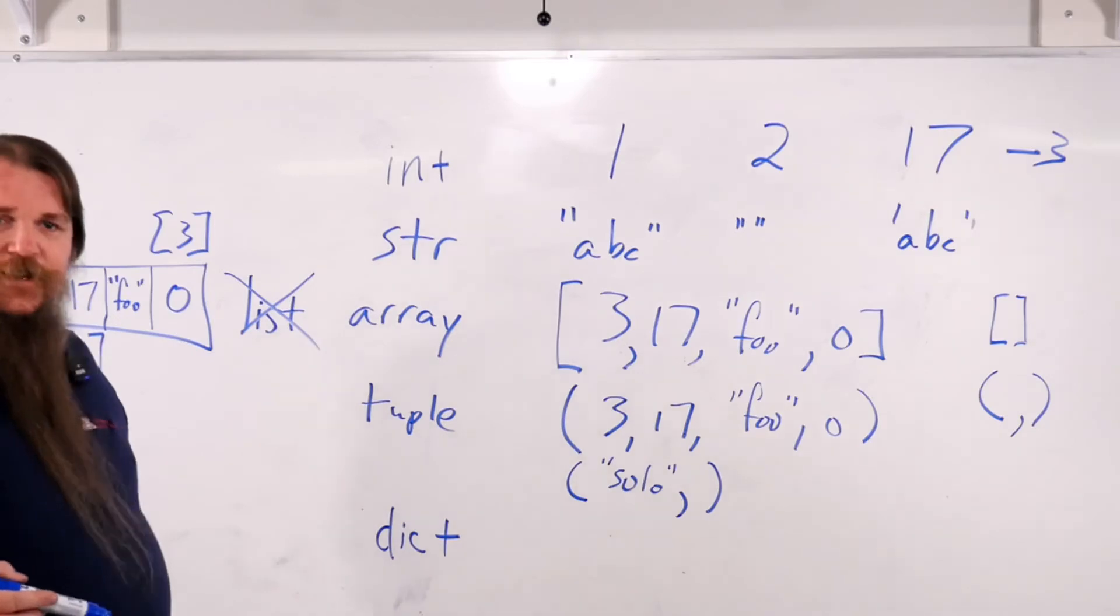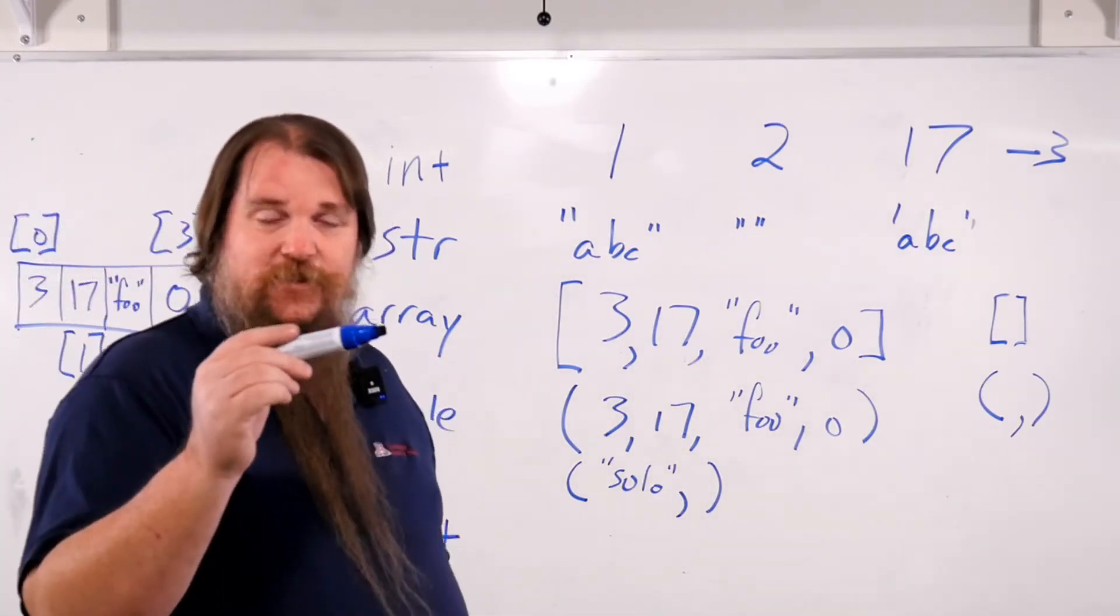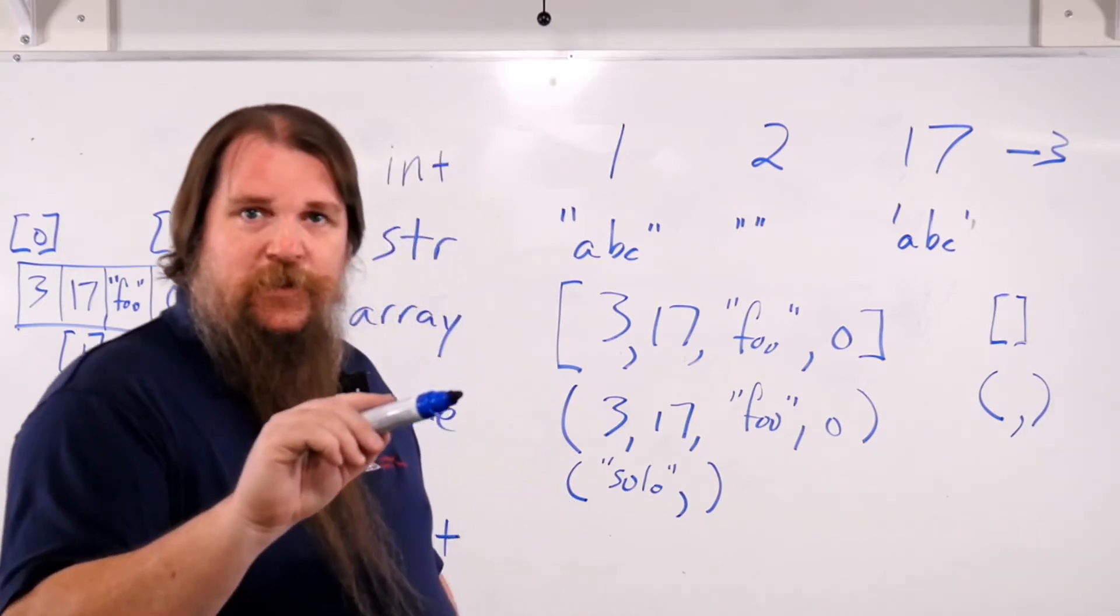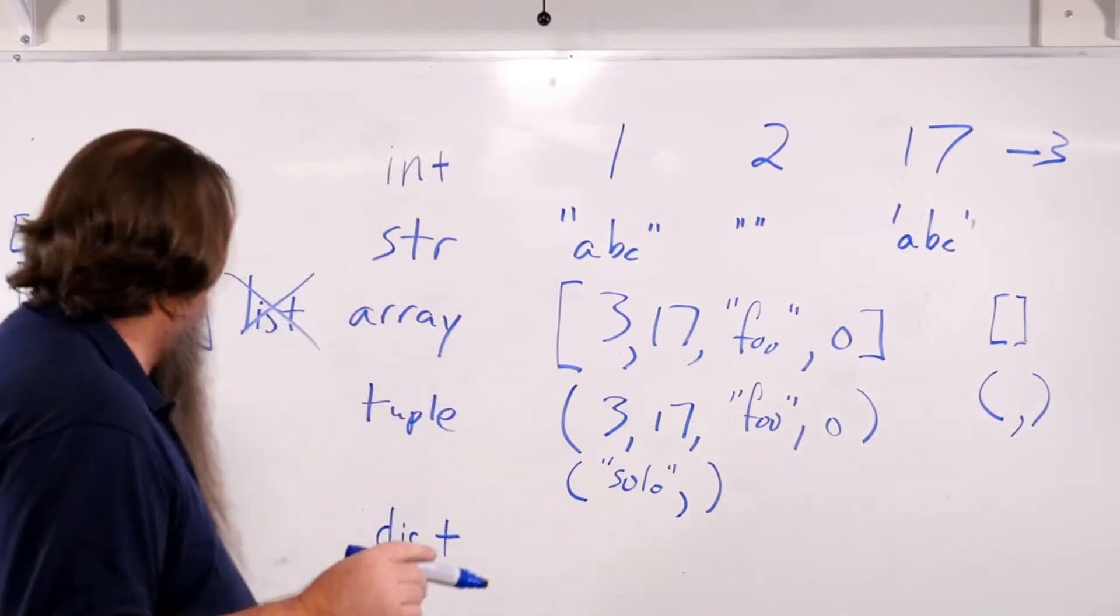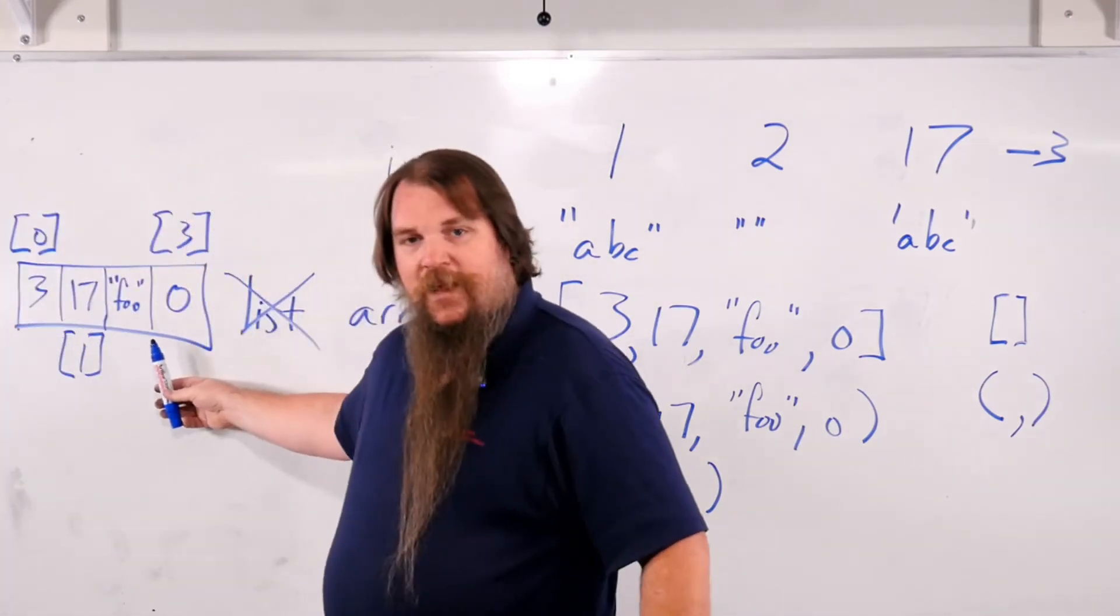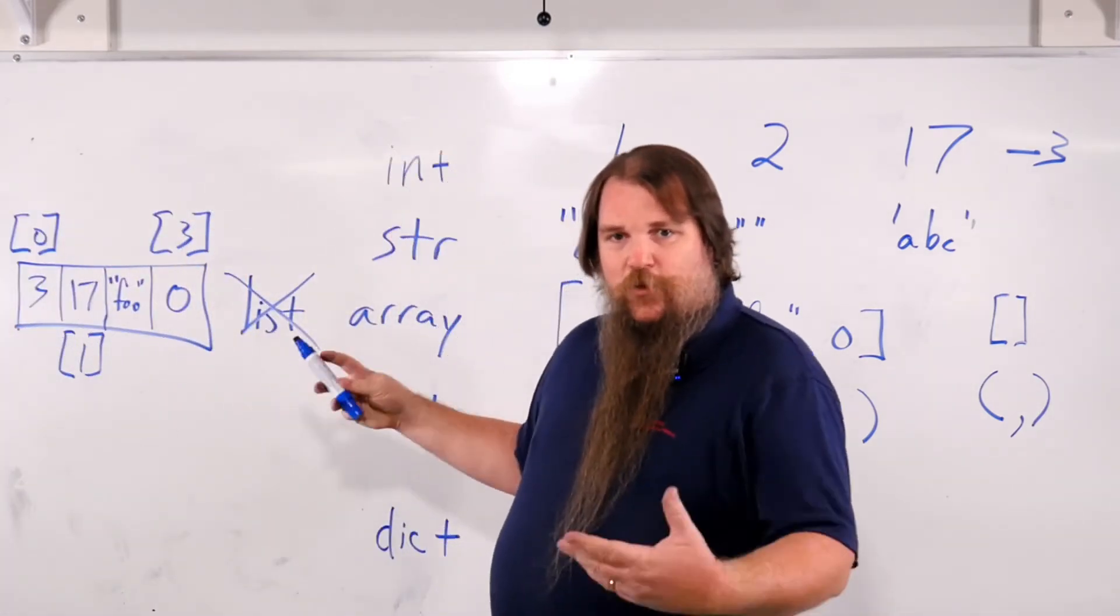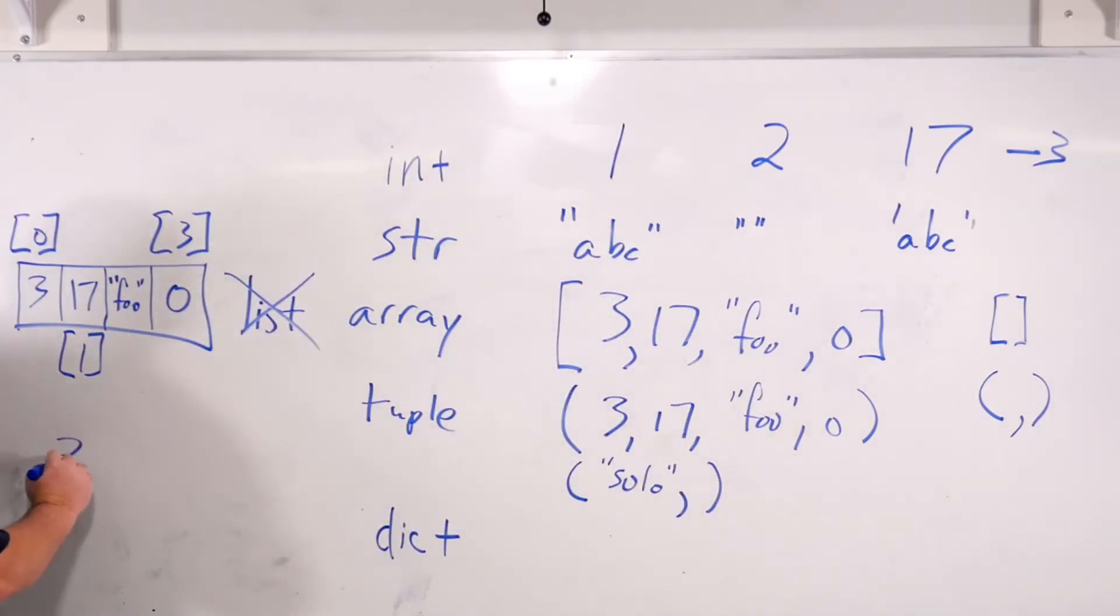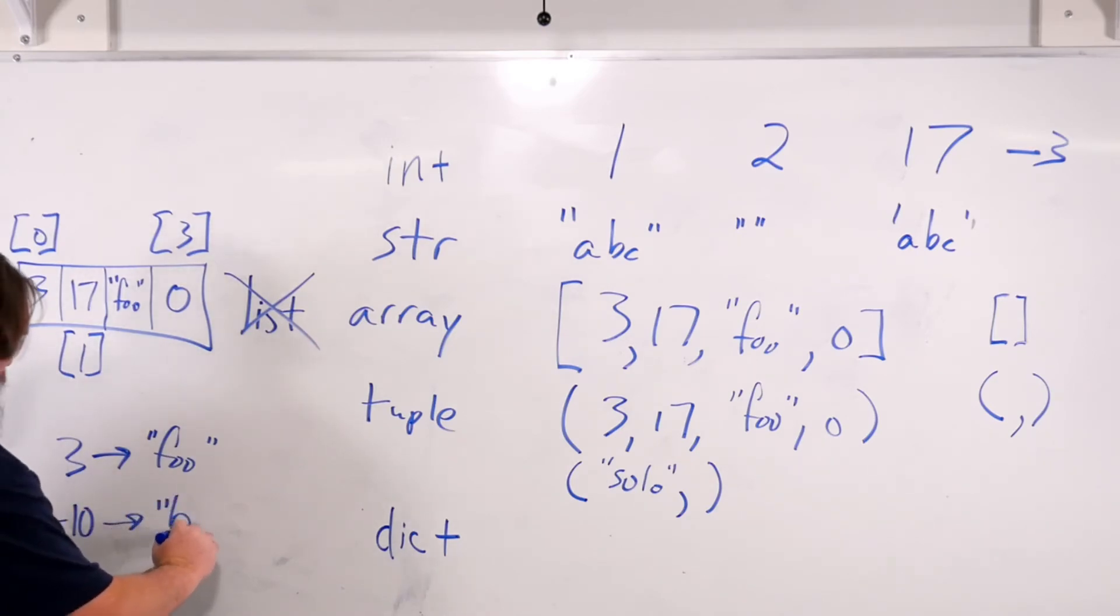The idea of a dictionary is that it takes keys, keys are input values, and it maps them to values. So instead of having things arranged in a line like this like we have in an array, instead what we have is a whole bunch of correlations. So we could say that 3 maps to foo and that negative 10 maps to bar.